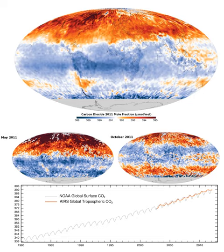Estimates based on reconstructed temperature records suggest that CO2 during the last 420 million years was approximately 2,000 ppm, highest during the Devonian (400 million years ago) and Triassic (220–200 million years ago), with a few maximum estimates ranging up to 3,700 ± 1,600 ppm 215 million years ago.